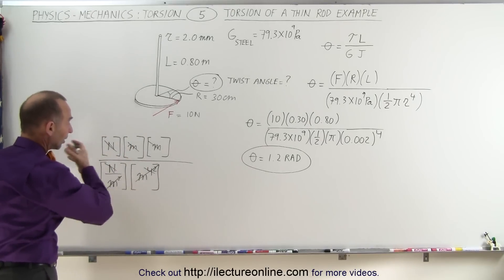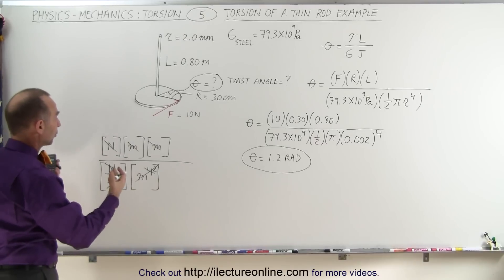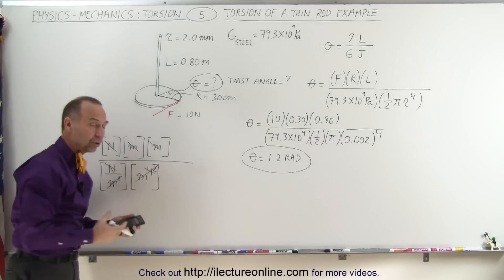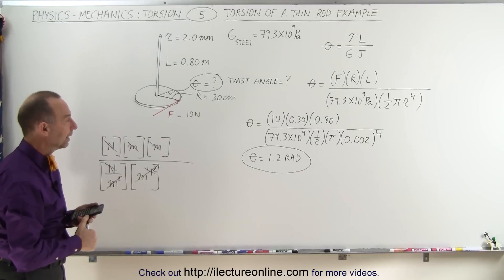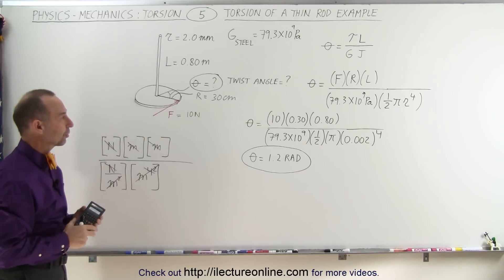In other words, all the units collapse, they cancel, and so the only thing left is radians, which is really a non-unit. We typically don't write that, and so we know that the units are correct.